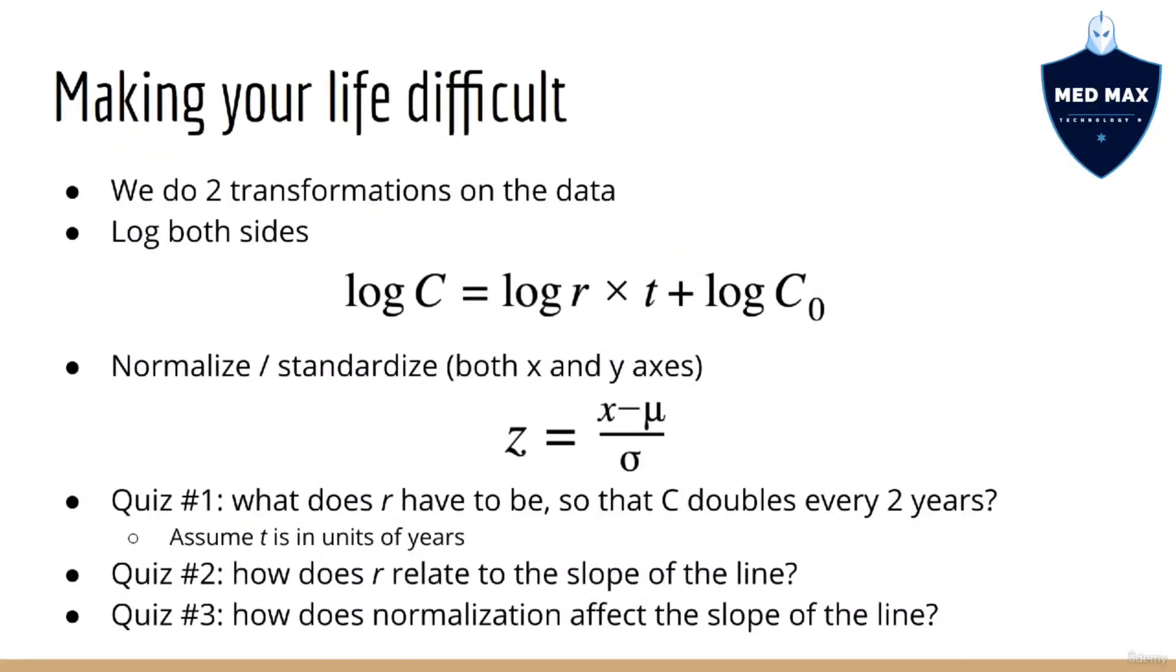The real question is, why do I mention this as a caveat? Here's the problem. We're doing two transformations on our data. This is going to make it more difficult to prove that transistor counts double every two years. So here's a quiz question for you. Given that the equation for exponential growth is c equals c0 times r to the power t, what does r have to be in order for the transistor count to double every two years if t is in units of years? I would strongly recommend you try to figure this out for yourself before we move on to the next lecture.